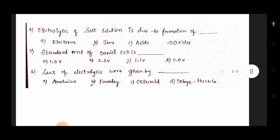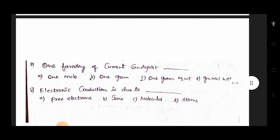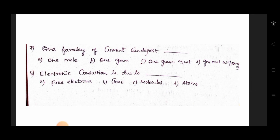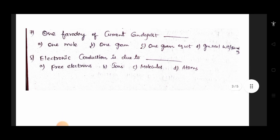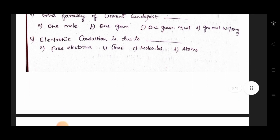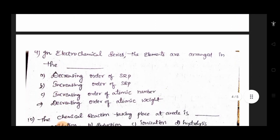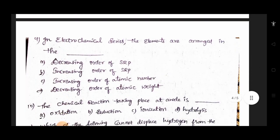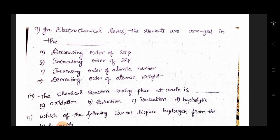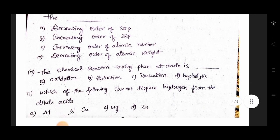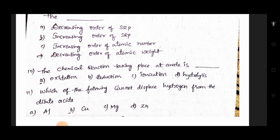Loss of electrolysis were given by one faraday of current can deposit. Electronic conduction is due to? In electrochemical series the elements are arranged in the decreasing water of SRP, the increasing water of SRP, increasing water of atomic number. The radiation in the chemical reaction taking place at an anode is